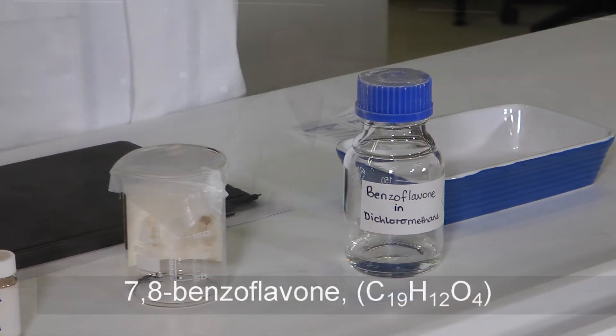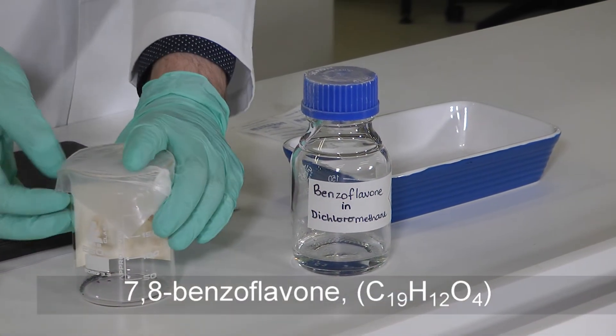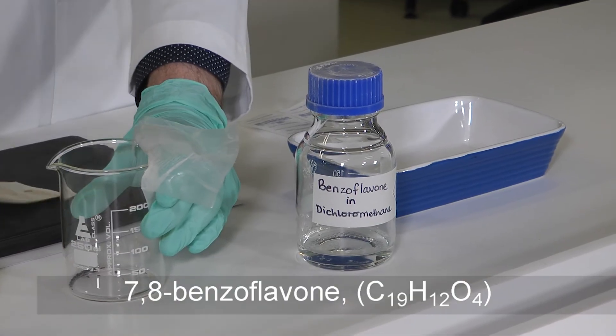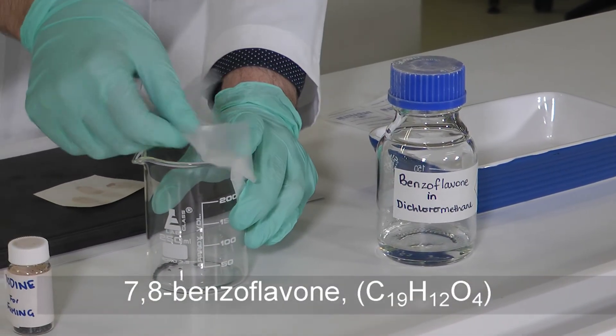The fixing solution that we're going to use today is 7,8-benzoflavone. All we need to do is take our iodine-treated finger marks out of our beaker and seal that back up so we don't get any more of those fumes.